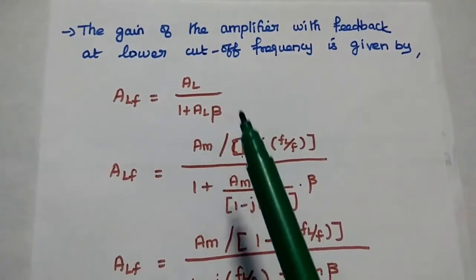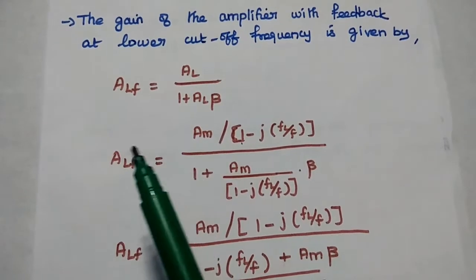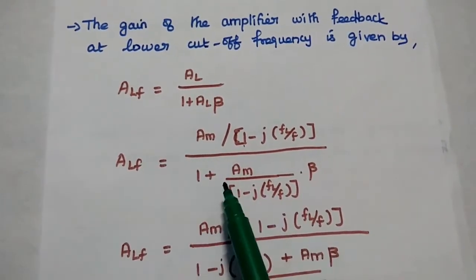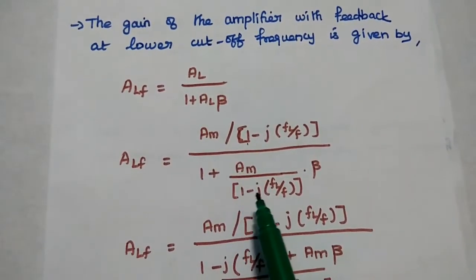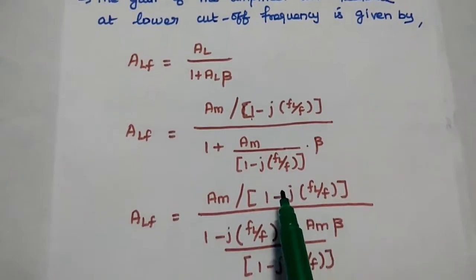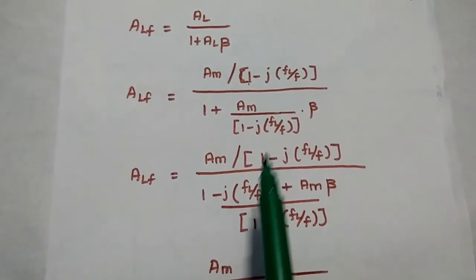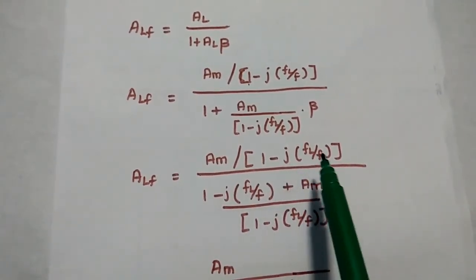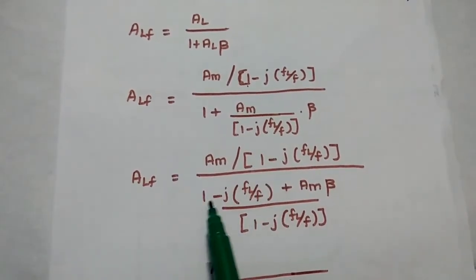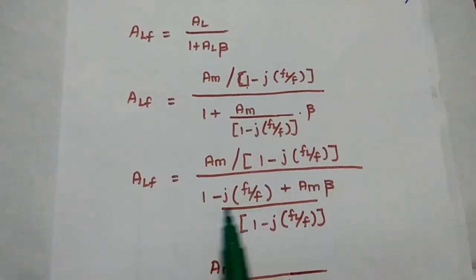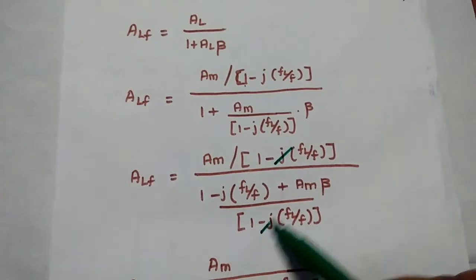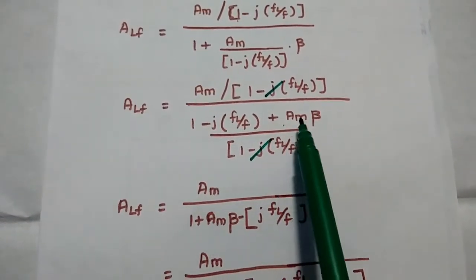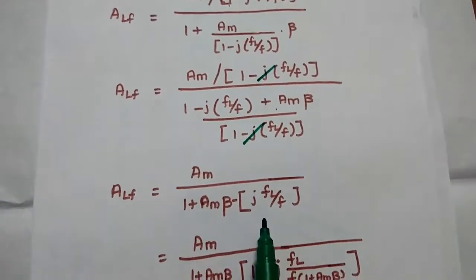As we know the value of AL, we substitute it into this formula. Then ALF = [AM / (1 − j·FEL/F)] divided by [1 + (AM / (1 − j·FEL/F))·β]. Taking the common term, we multiply through, giving ALF = AM / (1 − j·FEL/F + AM·β), where the denominator combines both terms. Rearranging the denominator, we can write: AM divided by (1 + AM·β − j·FEL/F).